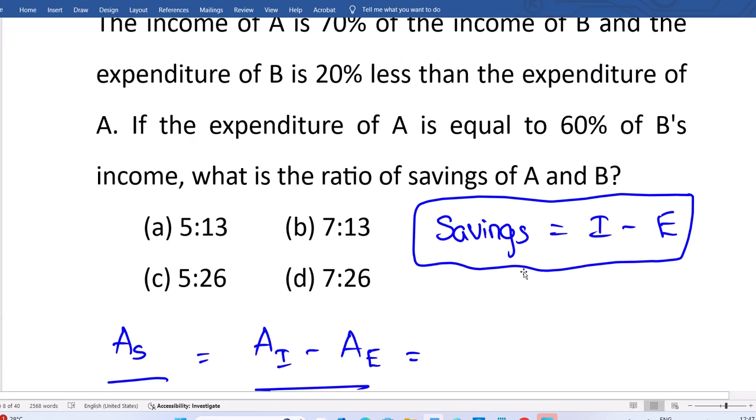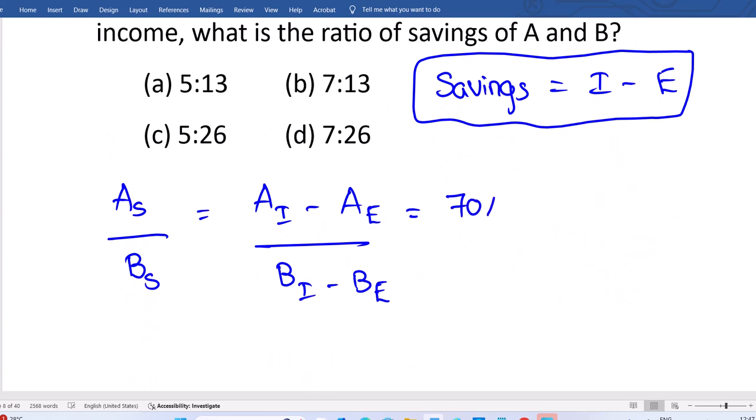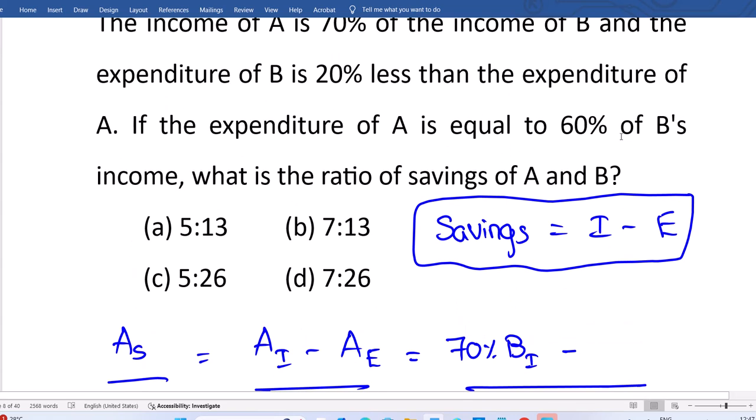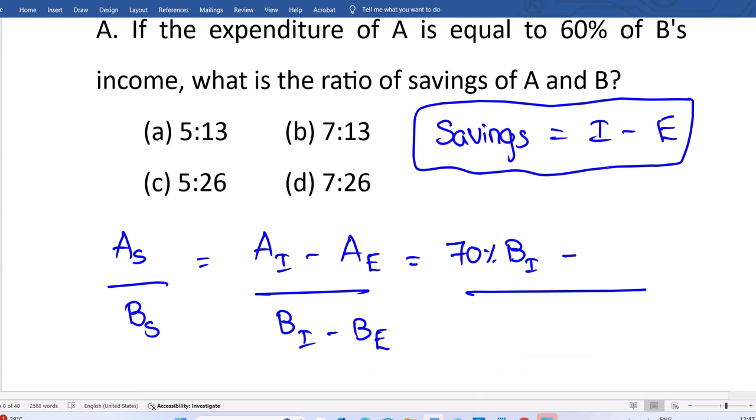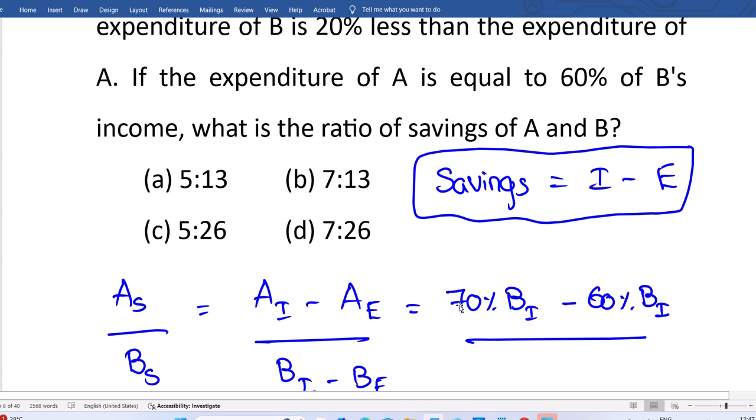As per the question, A income is equal to 70% of B income. Writing numerator: 70% of B income. Next, A expenditure is equal to 60% of B income. They give that expenditure of A is 60% of B income, so I'm writing this is 60% of B income. So far is it correct? They give A income is 70% of B income, we write A income as 70% of B income. In question itself they give expenditure of A is equal to 60% of B income, that also we mapped.